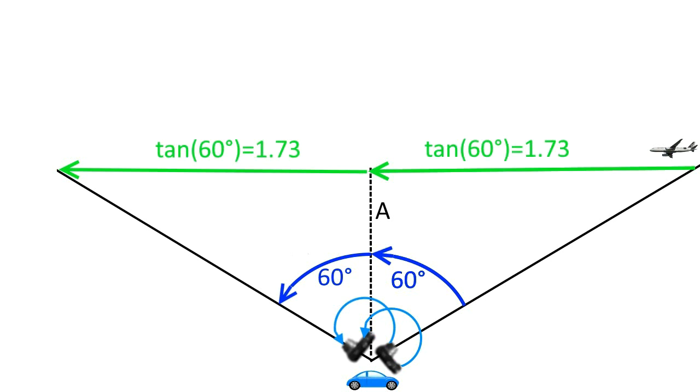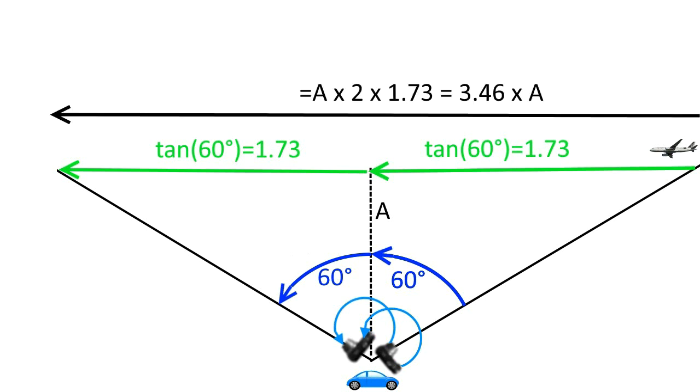For the first 60 degrees, the flight path of the aircraft is a function tangent of 60 degrees. That's the ratio 1.73 to the distance A of the aircraft. Overall, therefore, the distance that the aircraft flies during this observation is 3.46 times the distance, namely twice the value of the tangent of 60 degrees.